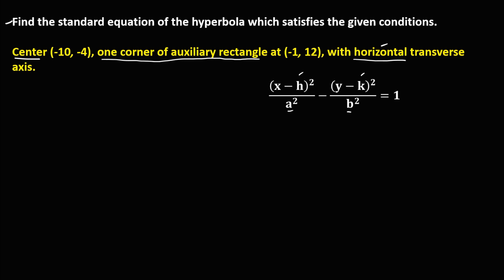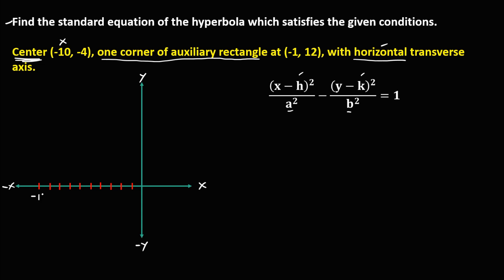From the given conditions, we need to graph this hyperbola. In the coordinate plane, from the given coordinate of the center, x is negative 10 and y is negative 4. We connect these to find the point of the center.